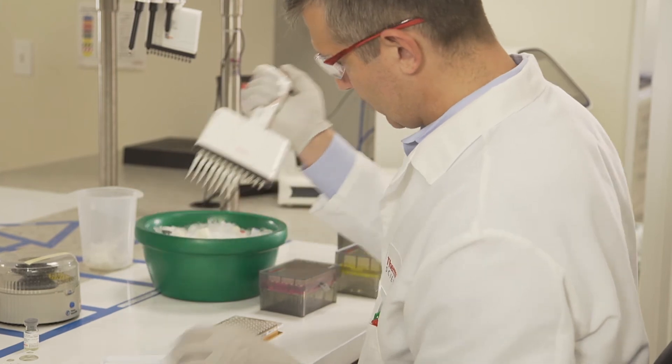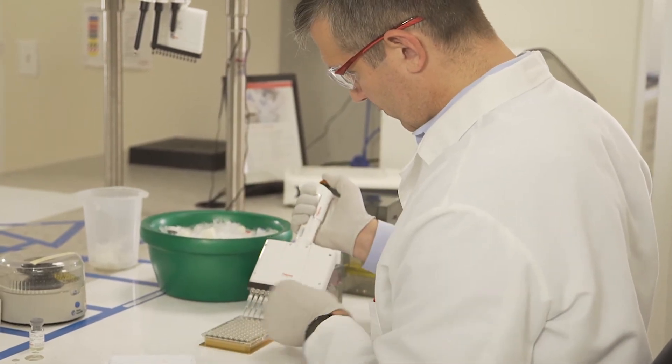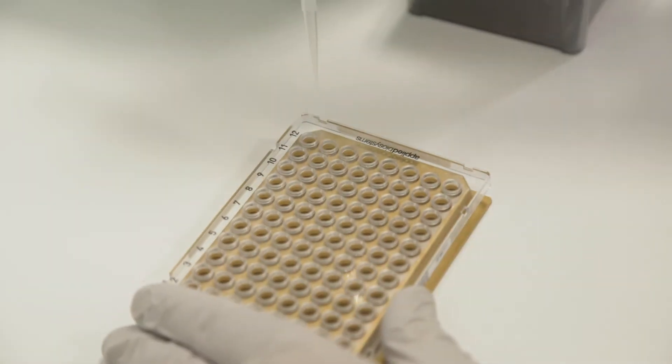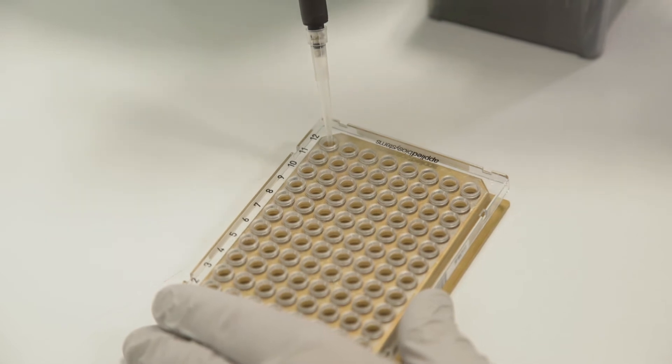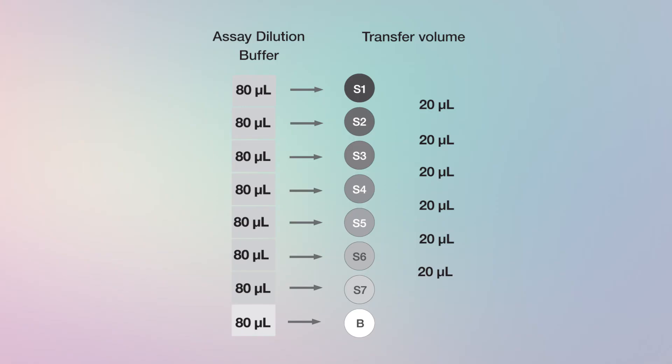To create your standard curve, add assay dilution buffer to each well. Then add the reconstituted protein to the S1 well. Continue to serially dilute the protein, making sure to change pipette tips in between. Remember to include a background well.